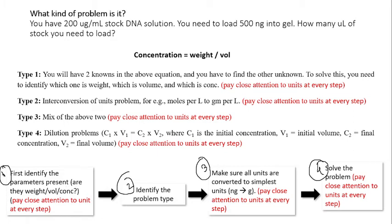The four steps are: first, identify the parameters present in the problem. By parameters, I mean they can be either weight, volume, or concentration. These are the three parameters you typically encounter in these types of problems. Then based on that, you identify the problem type. There are four types of problems which I'll come to. Once you've identified the problem type, the third step is to make sure all units are converted to simplest units. For example, nanogram to gram, milliliter to liter, or micromolar to molar. This unit conversion will help you in your calculation.